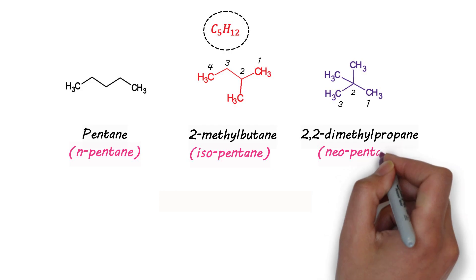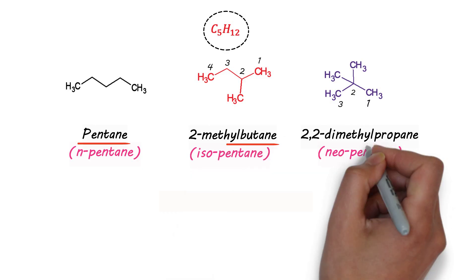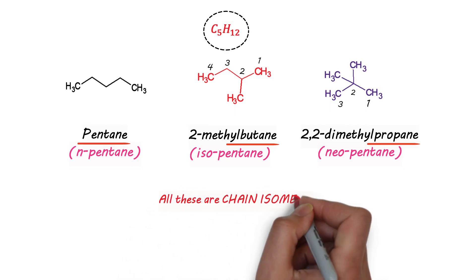So as in all the three cases the mother chain differs. That is in the first case it's pentane. In the second it is butane in the mother chain. In the third it's just propane. So all these are chain isomers.